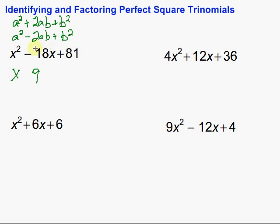So, then, we need to check and see if that middle term is this times this times 2. Well, let's see. x times 9 would be 9x times 2 would be 18x, and in this case, it's a minus, so we do have a perfect square trinomial. So, here's how it's going to break down. It's going to be x minus 9 squared.